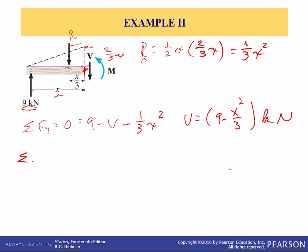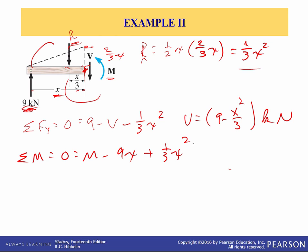Now summing moments about the cut end. The bending moment is drawn positive: we have the 9 kilonewton load at distance x, wanting to rotate clockwise — so minus 9x — and the resultant load x²/3 times its distance from the end, which is x/3, wanting to rotate clockwise — so plus (x²/3)(x/3). Solving, the bending moment as a function of x is M = 9x minus x³/9 kilonewton-meters.